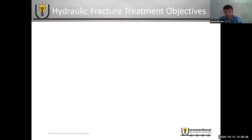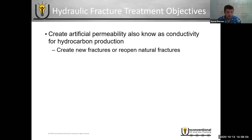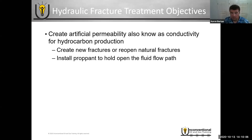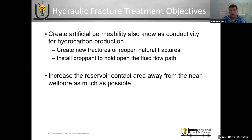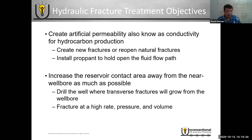Looking at the bigger picture of hydraulic fracture treatment objectives: we're creating conductivity so we can produce the hydrocarbons. Depending on the play, we may be creating new fractures or reopening natural fractures blocked by calcite. We install proppant to hold open the fluid flow path, and our main objective is to create as much reservoir contact area as possible away from the near wellbore. We drill the well in a direction to grow transverse fractures, and we fracture at high pressure, high rate, and high volume — significantly larger frac jobs than most conventional applications.